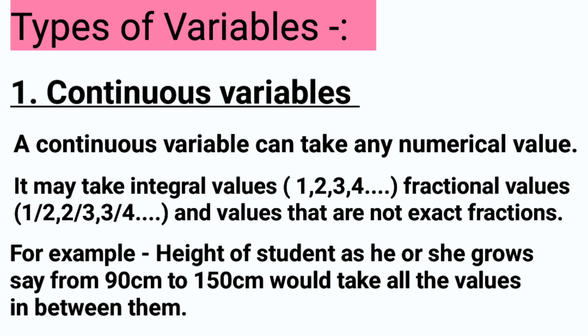In a continuous variable, we include both fractional and non-exact fraction values. For example, if we look at a person's height — it goes from 90 cm to 150 cm. We will not see exactly 90 to 91; we will see in fractions or non-fractions. We will see both. That is known as a continuous variable — it takes intermediate values.